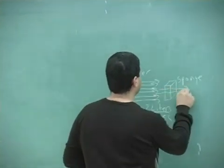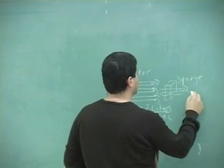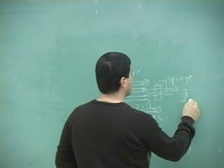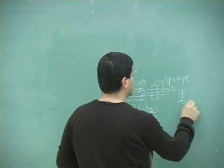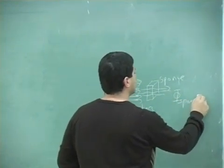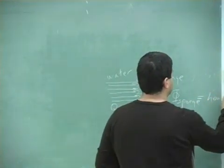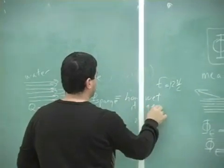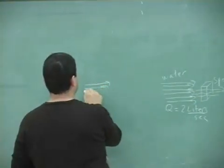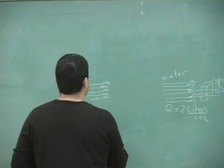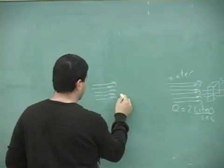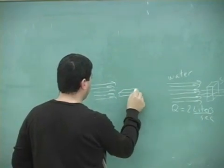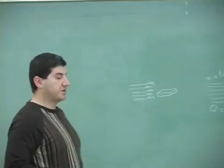So as the water is getting through that, the sponge would get really wet, right? So flux would describe how wet it gets. So if I have the same water flow, and then I put a little sponge here, it doesn't get as wet.